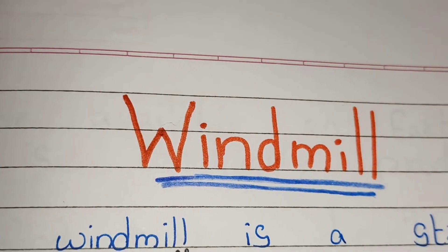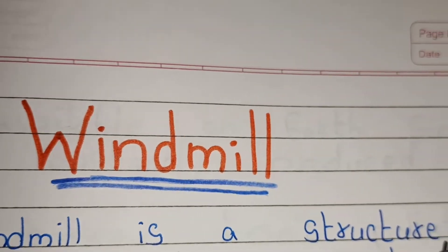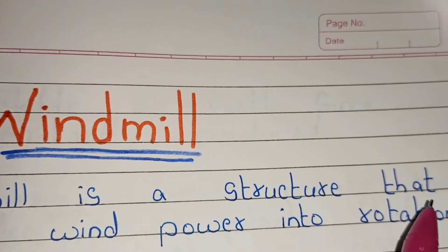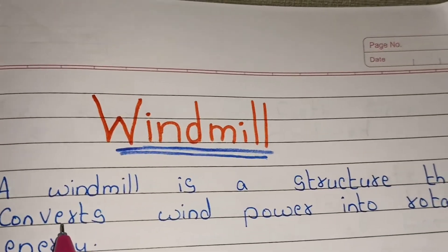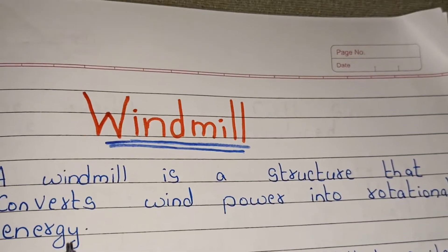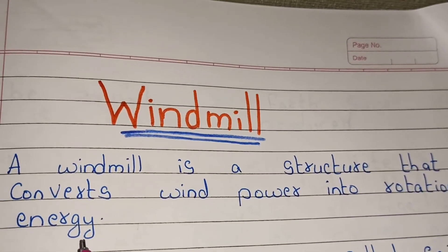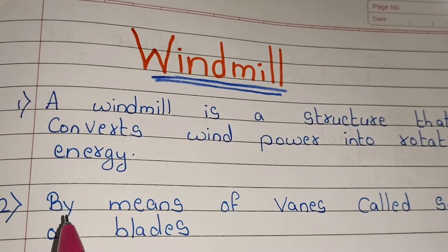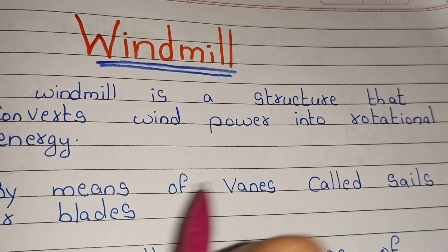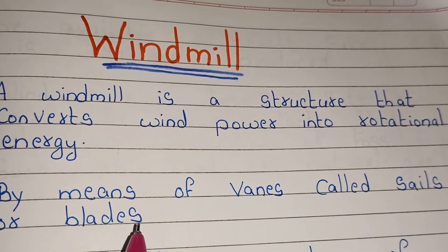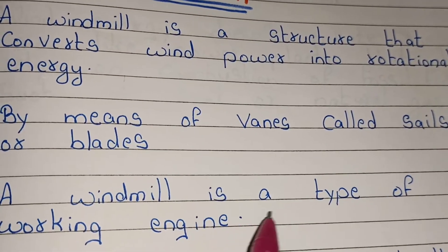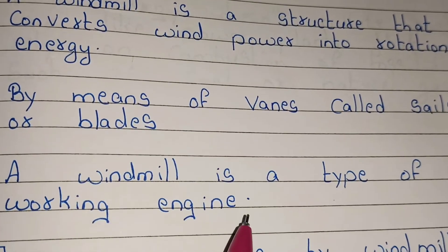A windmill is a structure that converts wind power into rotational energy, by means of vanes called sails or blades. A windmill is a type of working engine.